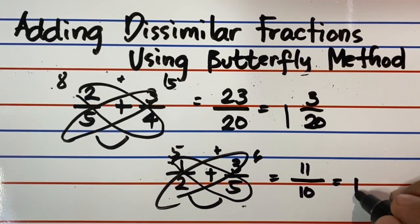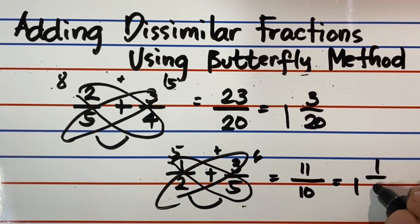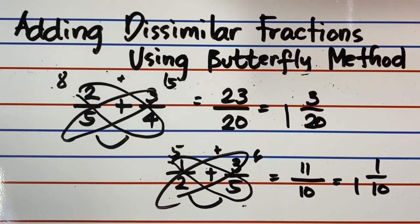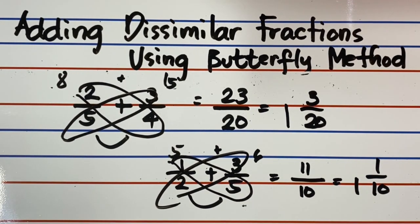Since it is an improper fraction, change it into a mixed number. How? Follow step number 6 again. The answer is 1 and 1 tenths.